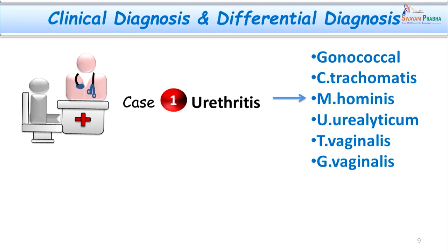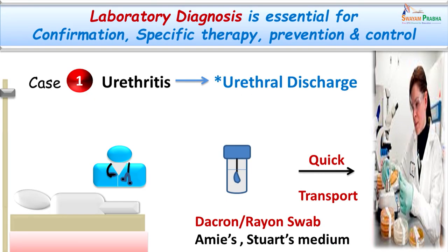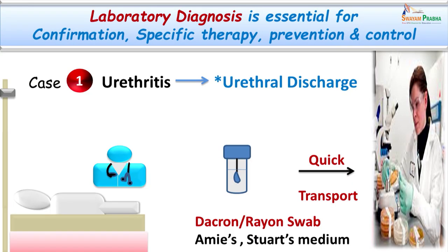The clinical diagnosis in case 2, as she came with complaints of joint involvement, was obviously a case of arthritis. However, in sexually active women the first consideration would be gonococcal arthritis. It could also be rheumatoid arthritis or gout. In these two cases we made the diagnosis clinically as urethritis and arthritis; however, we have to confirm with laboratory findings so that specific treatment can be initiated, especially as they are known to cause complications like infertility, strictures, etcetera.